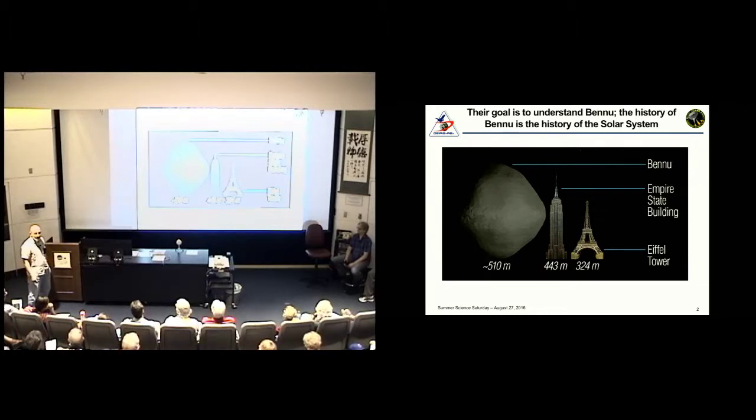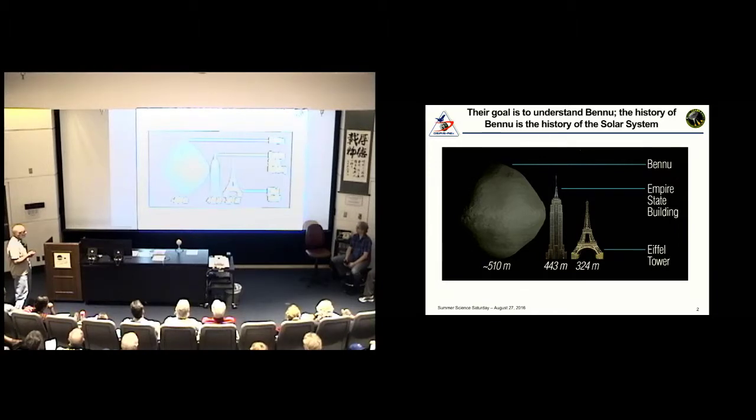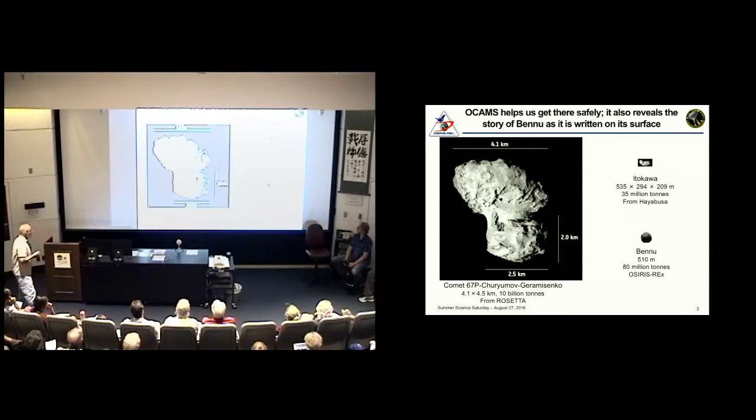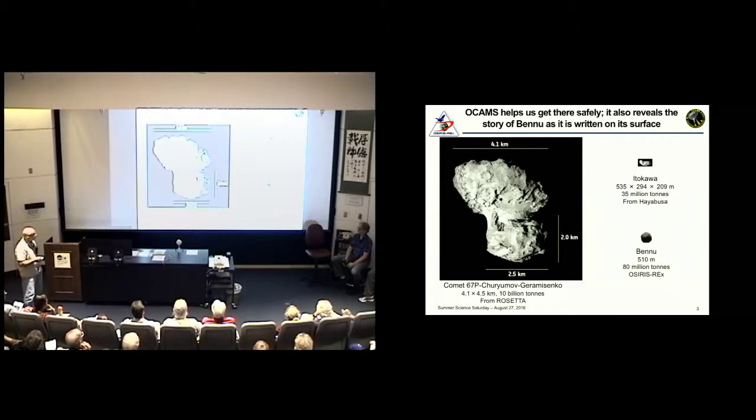We are going to the asteroid Bennu, shown here compared to the Empire State Building, which it's a little bit wider than the Empire State Building is tall. It's a small asteroid. It was found in 1999 by the Automated Asteroids Search Linear. It's been the most widely studied asteroid that we have, especially for a near-Earth asteroid.